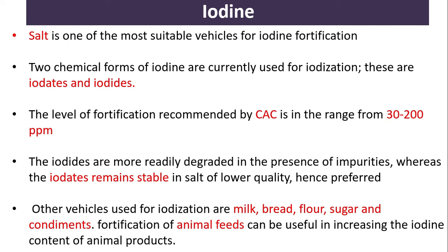Salt is one of the most suitable vehicles for iodine fortification. Two chemical forms of iodine are currently used: iodates and iodides. The level of fortification recommended by the Codex Alimentarius Commission (CAC) is in the range of 30 to 200 ppm. Iodides are more readily degraded in the presence of impurities, whereas iodates remain stable in salts of lower quality and are hence preferred. Other vehicles used for iodization include milk, bread, flour, sugar, and condiments.